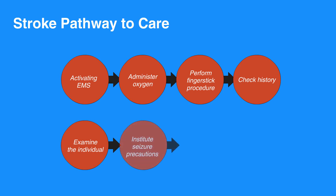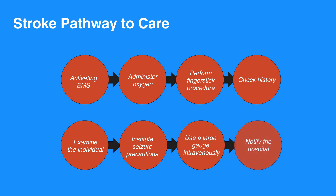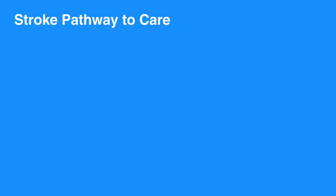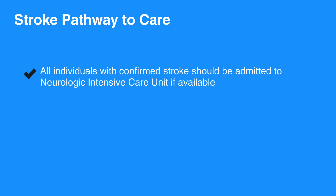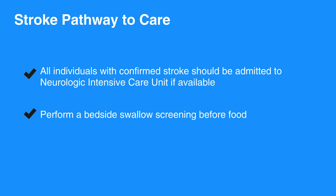Institute seizure precautions. Use a large gauge IV in the antecubital fossa. Notify the hospital and take the individual to a stroke center if possible. Individuals with ischemic stroke who are not candidates for fibrinolytic therapy should receive aspirin unless contraindicated by true allergy to aspirin. Before giving anything such as medication or food by mouth, you must perform a bedside swallow screening.